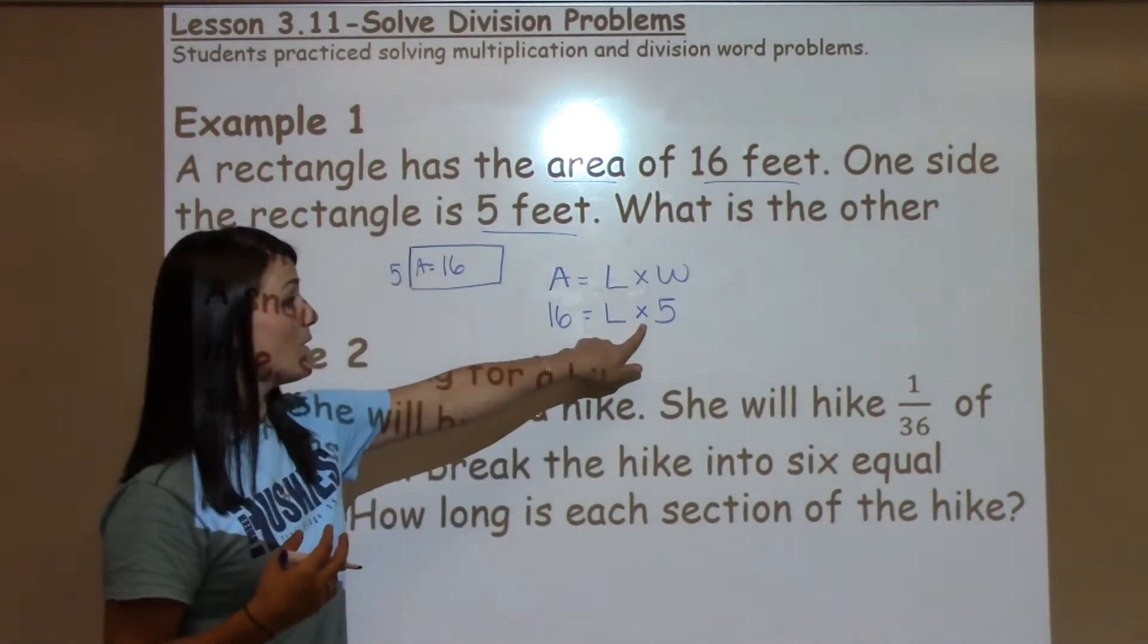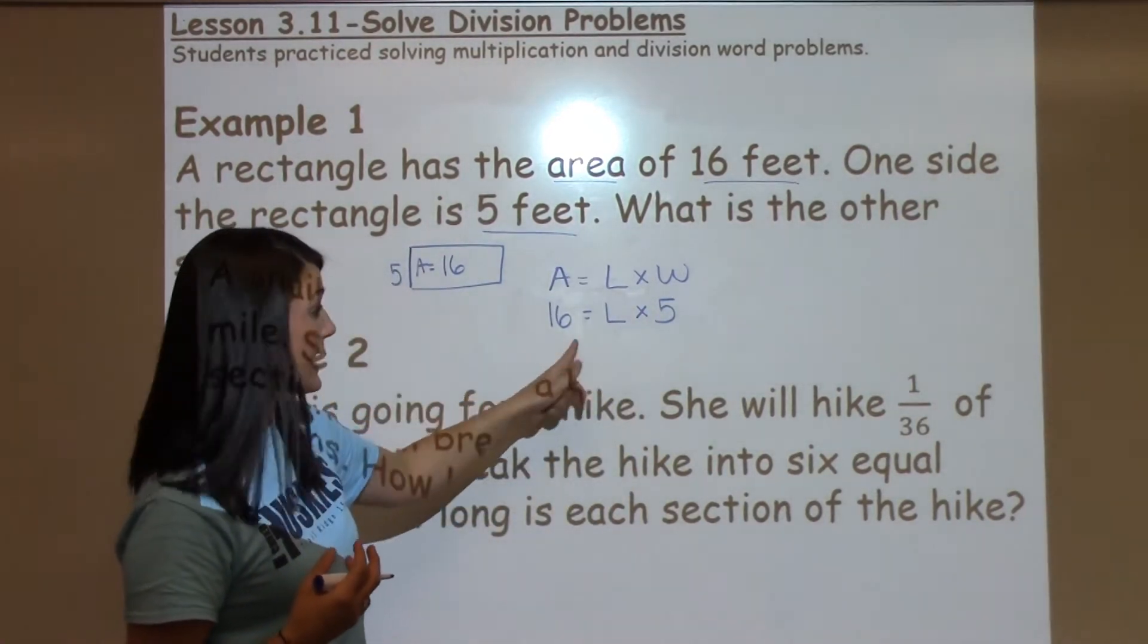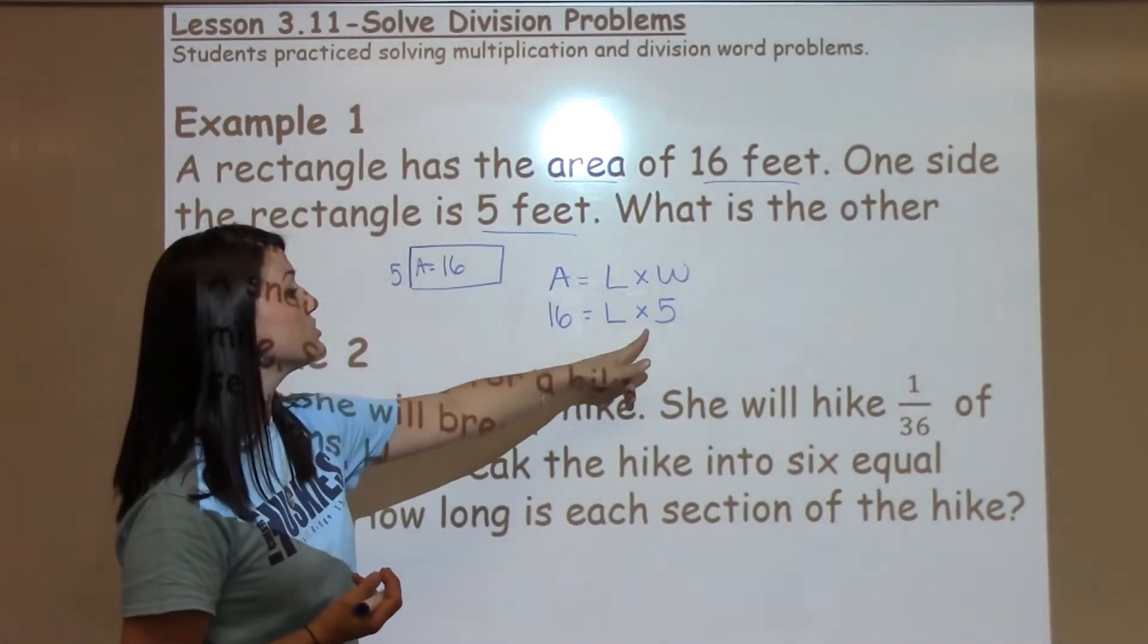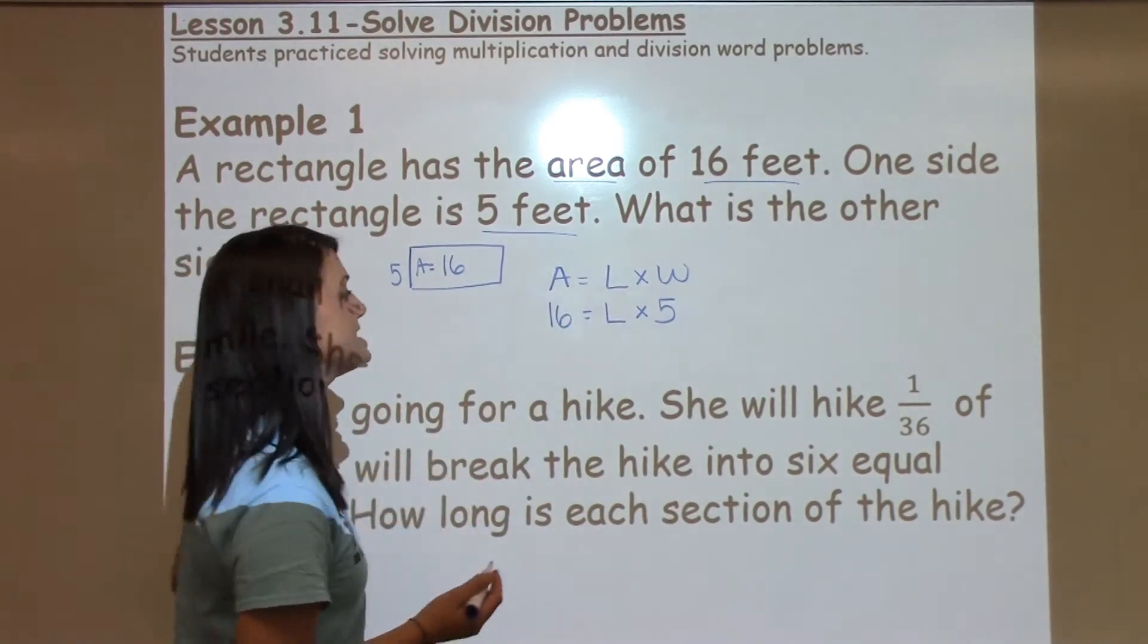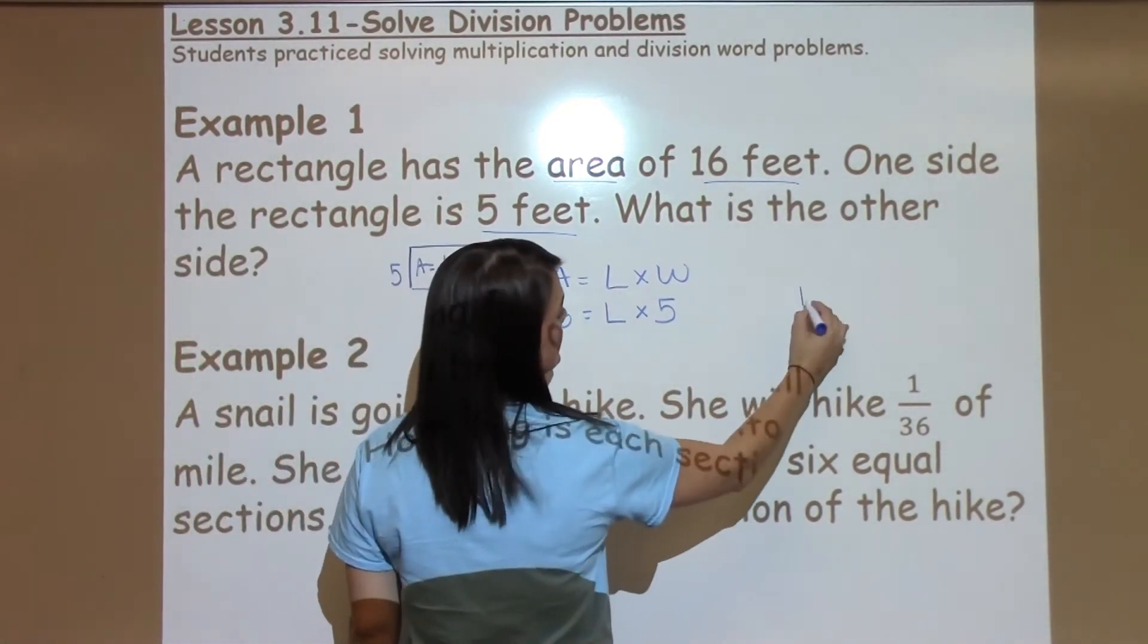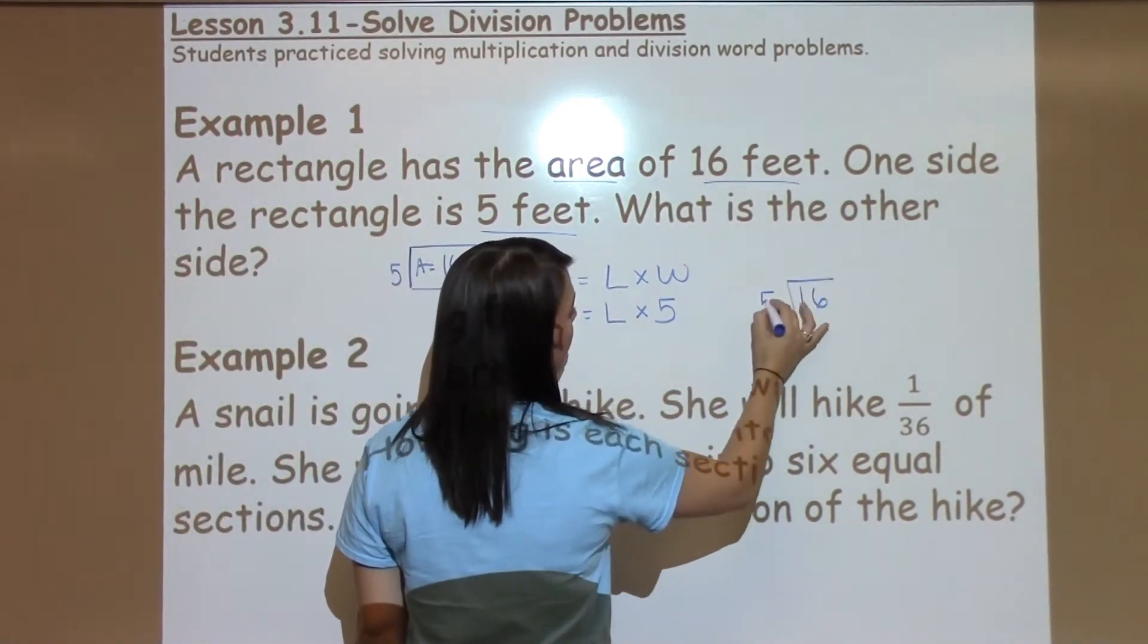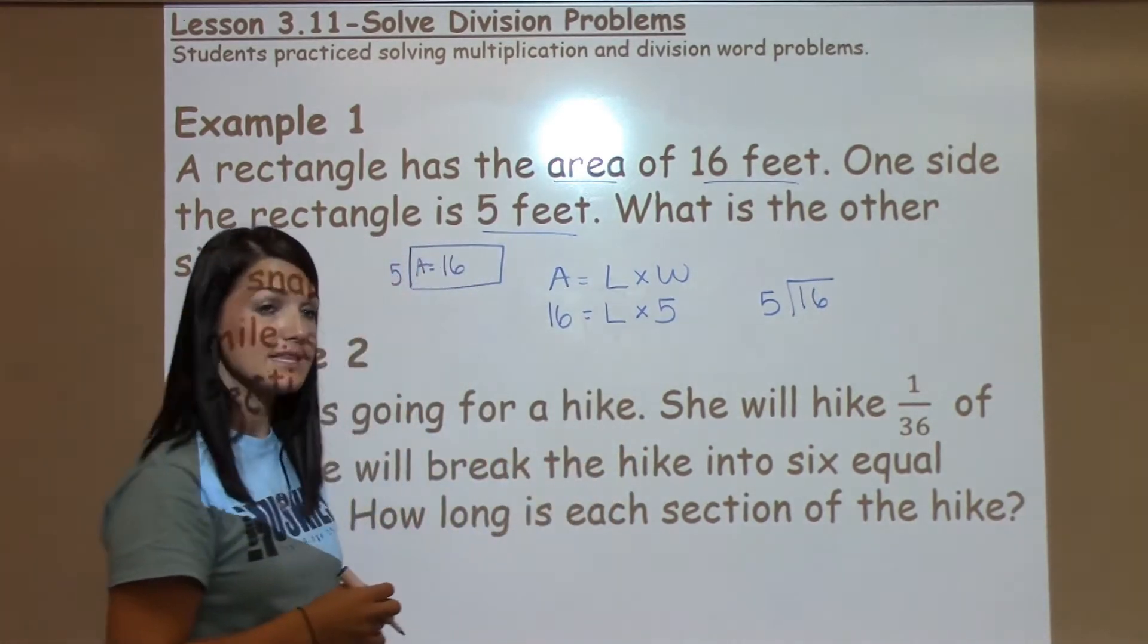I know in order to find out what's missing in a problem when I already have the answer, I have to do the opposite operation. So instead of multiplying, I'm going to need to divide 16 by 5 to figure out what the length is.